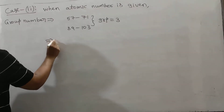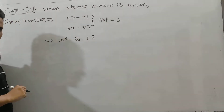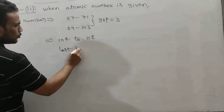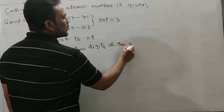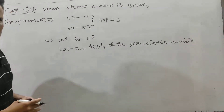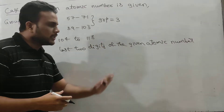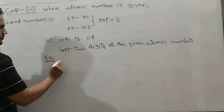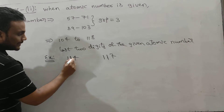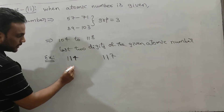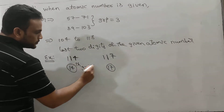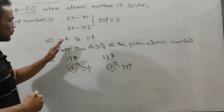If the atomic number is given between 104 to 118, then the group number is always equal to the last two digits of the given atomic number. Like, if you are given 114 — the last two digits are 1 and 4, so group number is 14. And 117 — last two digits 1 and 7 means it is the 17th group. So for 104 to 118, this is the shortcut.